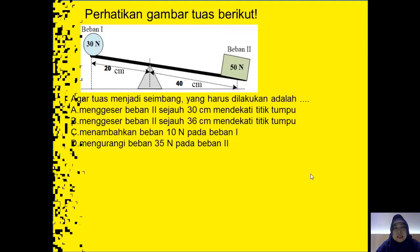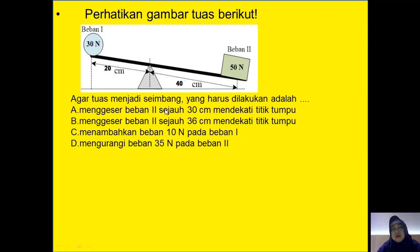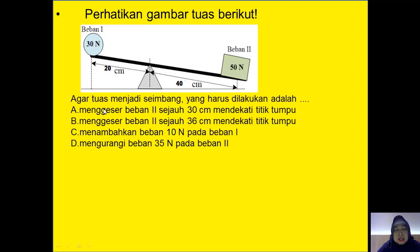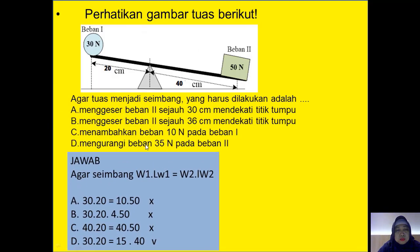Ada soal lagi, ini soal ujian sekolah juga. Perhatikan: hampir sama, tapi kalian disuruh memainkan. Diketahui gambar: ada beban 1 sebesar 30 Newton dan beban 2 sebesar 50 Newton. Dari titik tumpuh ke beban 1 adalah 20 cm, dari titik tumpuh ke beban 2 adalah 40 cm. Agar tuas seimbang karena ini ngejomplang. Rumusnya W1 x LW1 sama dengan W2 x LW2. Kita uji satu per satu.